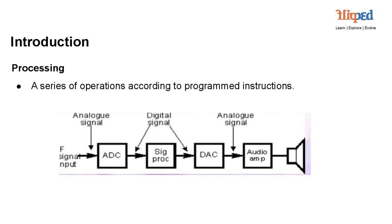Signal processing operates as a series of operations according to programmed instructions. The flow begins with the input signal, which is an analog signal — a continuous waveform representing information such as audio or sensor data. The analog signal passes through the ADC (Analog to Digital Converter) block, which converts the continuous analog signal into a discrete digital representation by sampling it at regular intervals and quantizing each sample to a digital value. The digital signal is then processed in the Signal Processing block, which performs operations such as filtering, transforming, or modifying it according to the desired signal processing goals, producing an output digital signal.